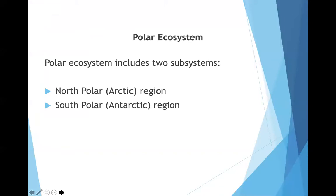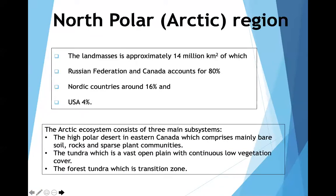The polar ecosystem includes two subsystems: the North Polar Arctic region and the South Polar Antarctic region. The North Polar region is approximately 14,000,000 km², of which 80% is under the Russian Federation and Canada, 16% by Nordic countries, and 4% USA. In terms of ecosystem, it consists of three main parts: the high polar desert areas, the tundra — which is a vast open plain — and the forest tundra.